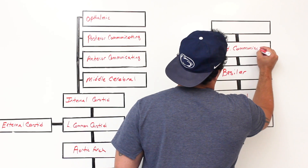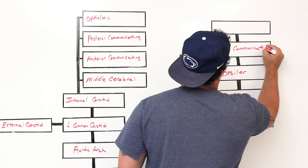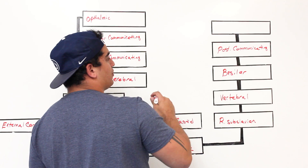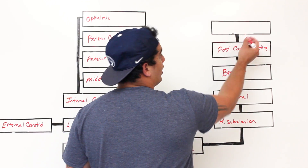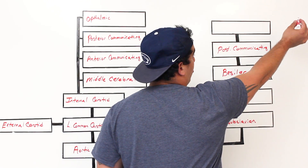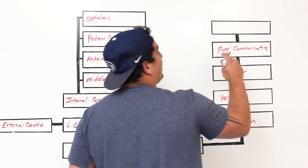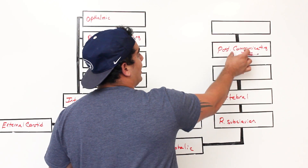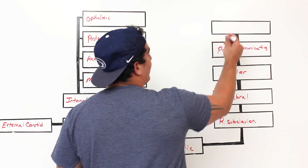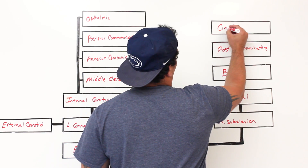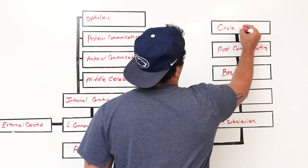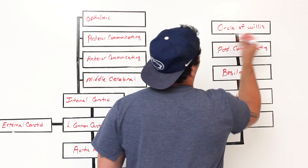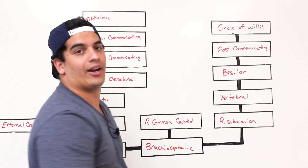Through the posterior communicating branches, blood from the basilar system can circulate throughout the Circle of Willis. From there it can go to the posterior cerebral artery or other parts of the circle. We'll discuss this in more detail in the dedicated Circle of Willis diagram.